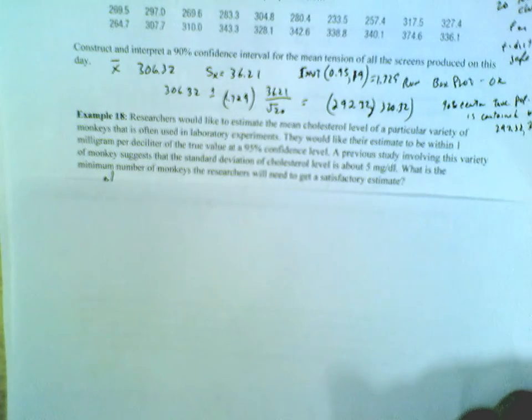In this case, we're going to work with an earlier study that calculated a sample standard deviation of 5 milligrams, and we're going to treat that as if it's the population standard deviation. How can we get our margin of error within 1 milligram per deciliter?